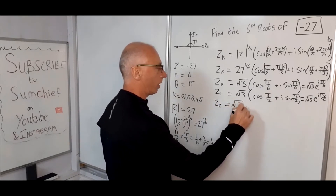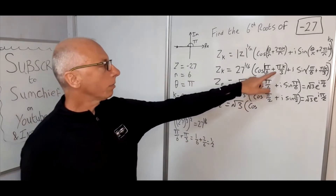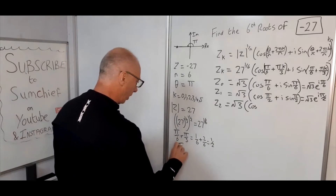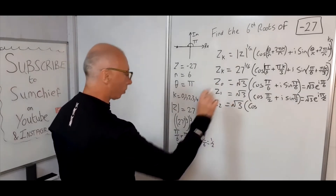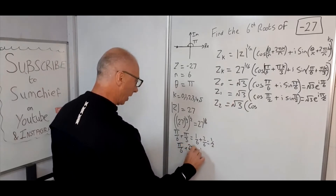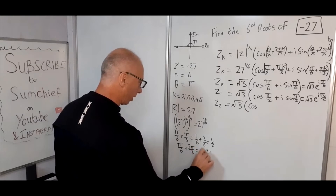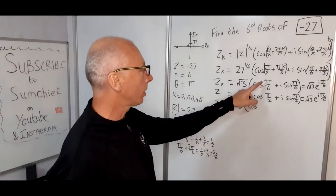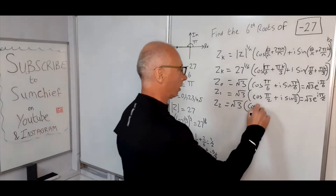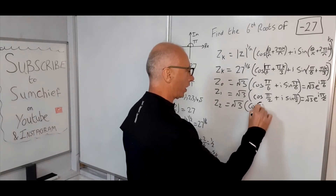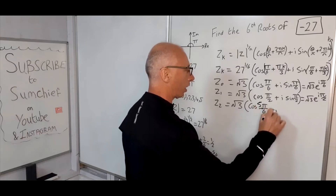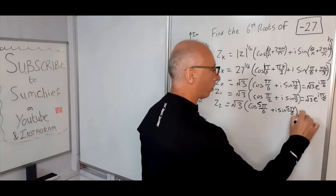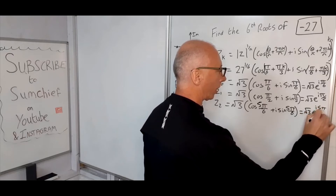For Z₂ (K = 2), we get cosine of (pi over 6 plus 2 pi over 3), which is 1 over 6 plus 4 over 6, equals 5 pi over 6. So we can see a pattern: the angles are pi over 6, 3 over 6, 5 over 6 — going up in steps. Z₂ = root 3 times (cosine 5 pi over 6 plus i sine 5 pi over 6), which equals root 3 e to the i 5 pi over 6.